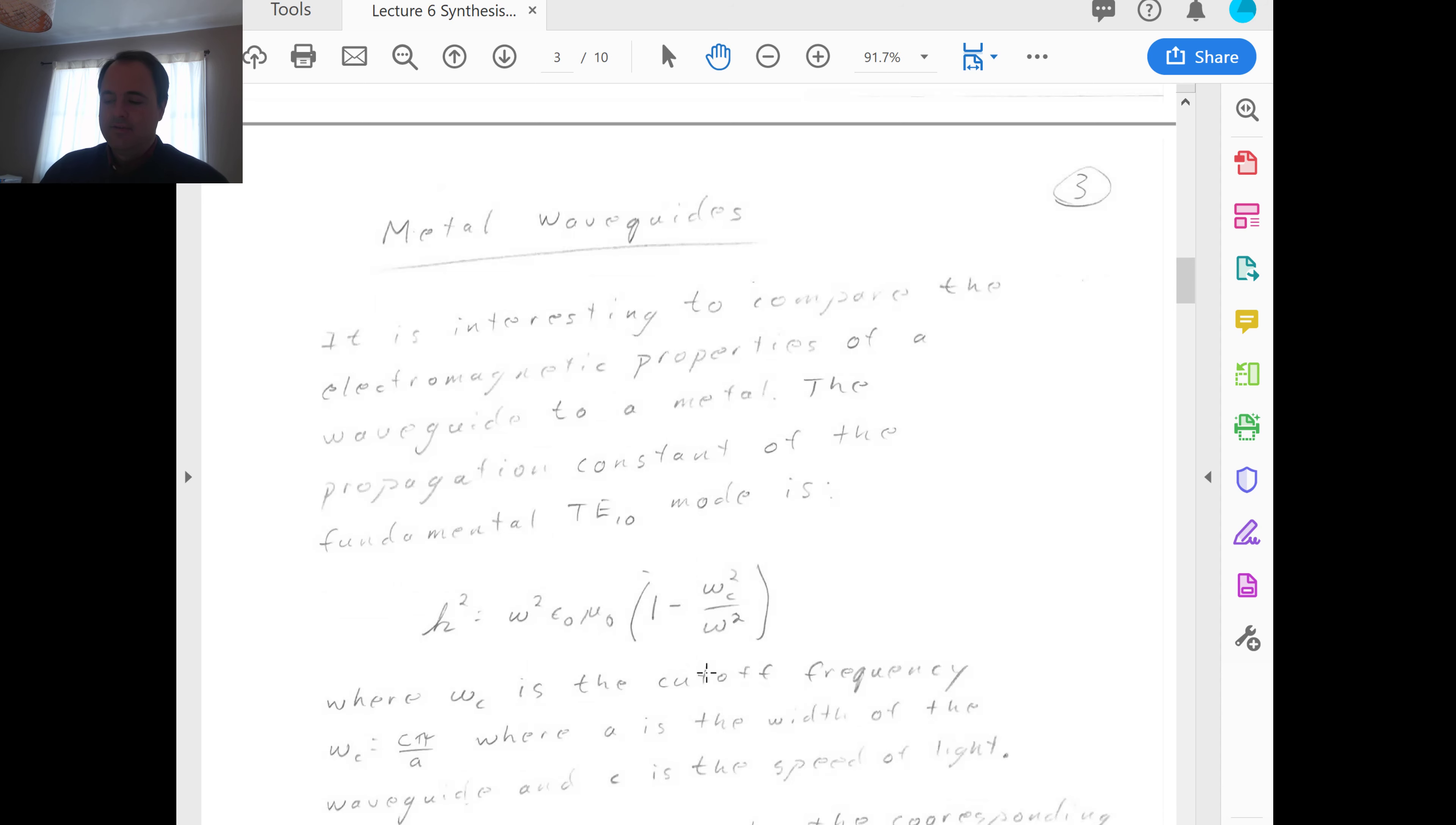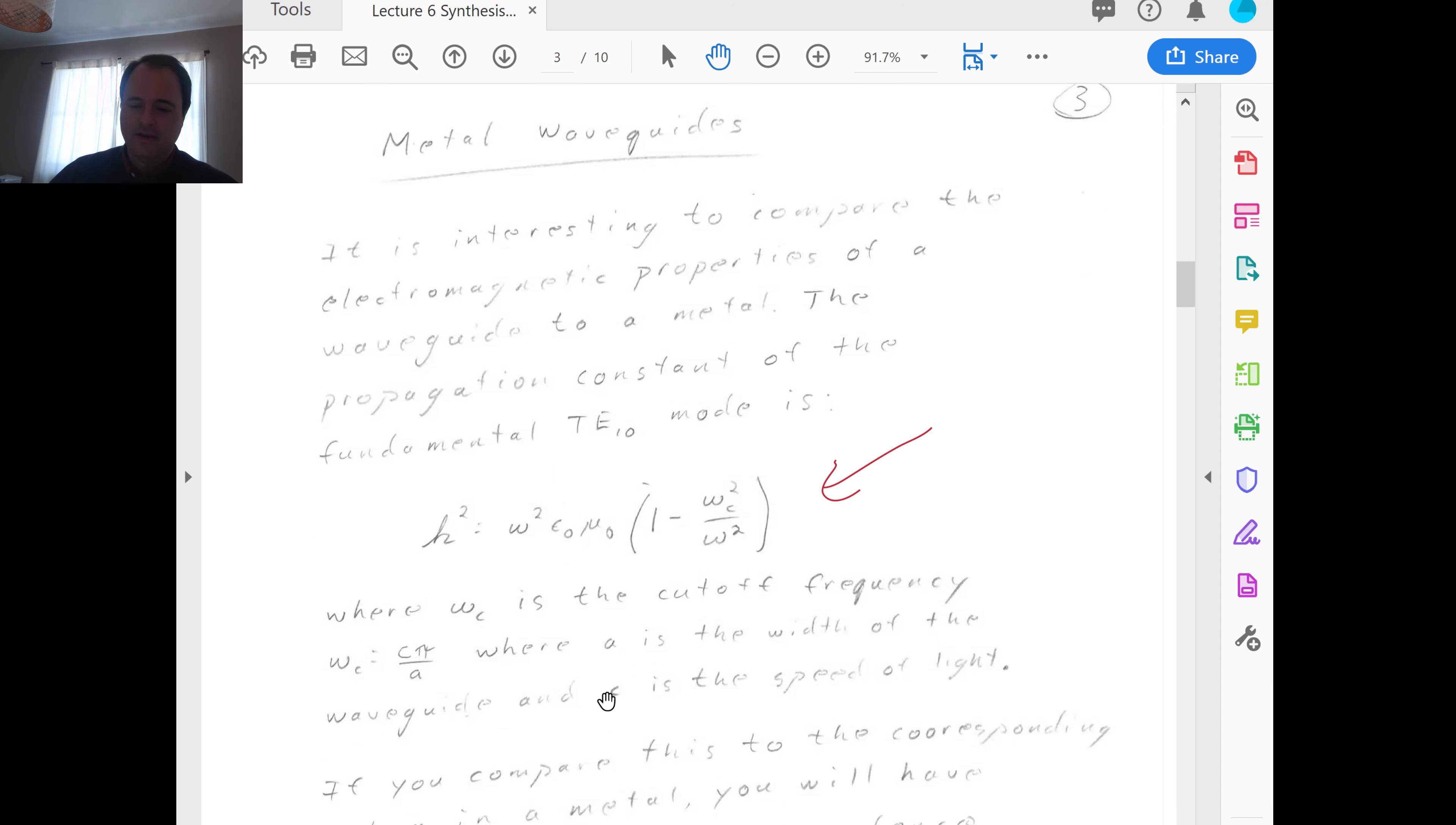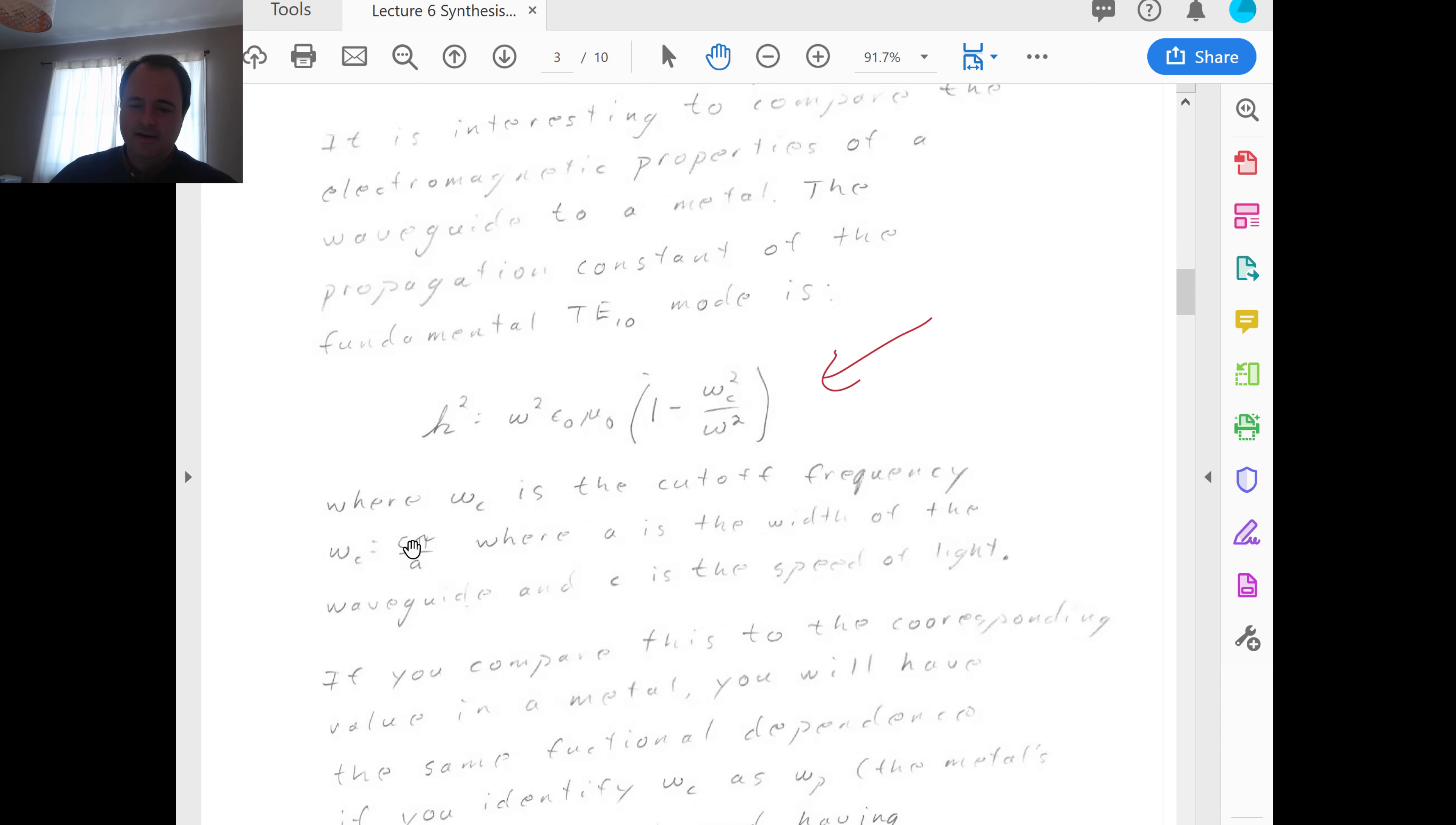Marquez approaches this solution in baby steps by first considering metallic waveguides, then a single metallic waveguide, then a periodic array of waveguides, and then the full 3D wire mesh grid. So let's first do the single metal waveguide. It is interesting to compare the electromagnetic properties of a waveguide to a metal, as he does in the book.